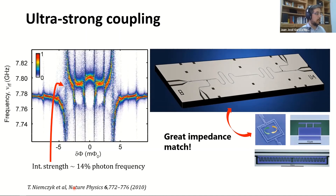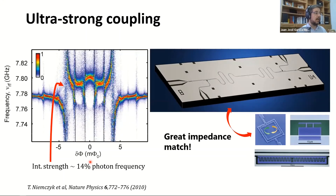Because superconducting circuits use the same material to simulate both photons and matter, the coupling between artificial atoms and microwave photons is far stronger than real photons coupling to ordinary atoms in free space. In 2010, a group in Munich showed coupling strength of 14% of the photon frequency; since then, groups in Japan have achieved over 100% — the interaction energy between photon and qubit can exceed the photon's own energy.